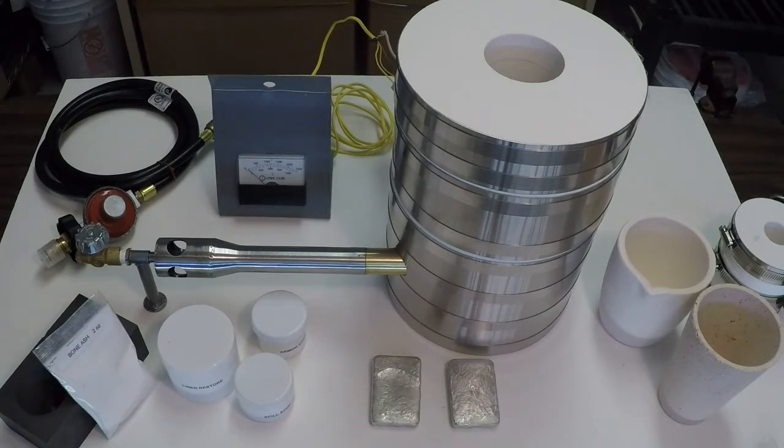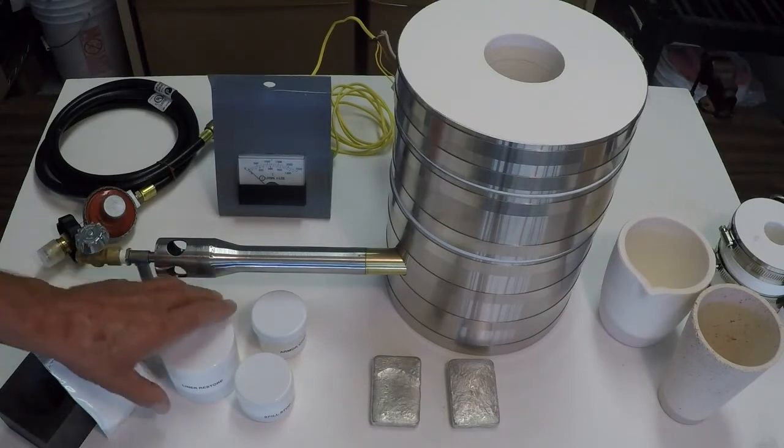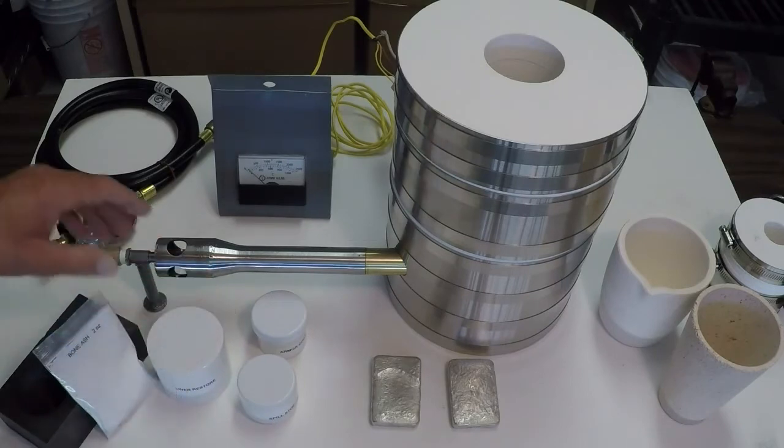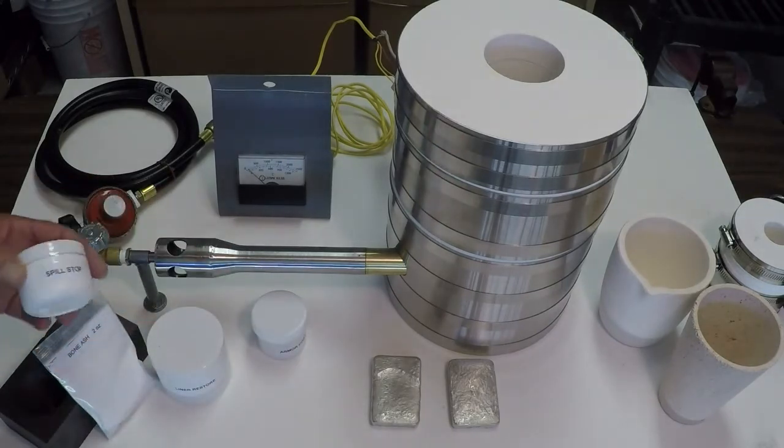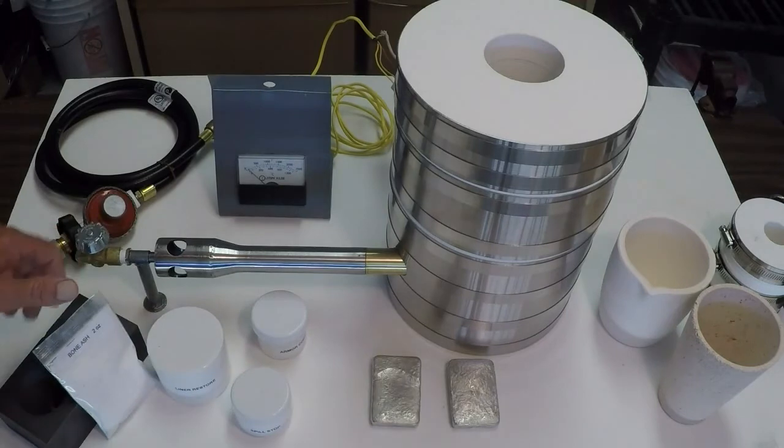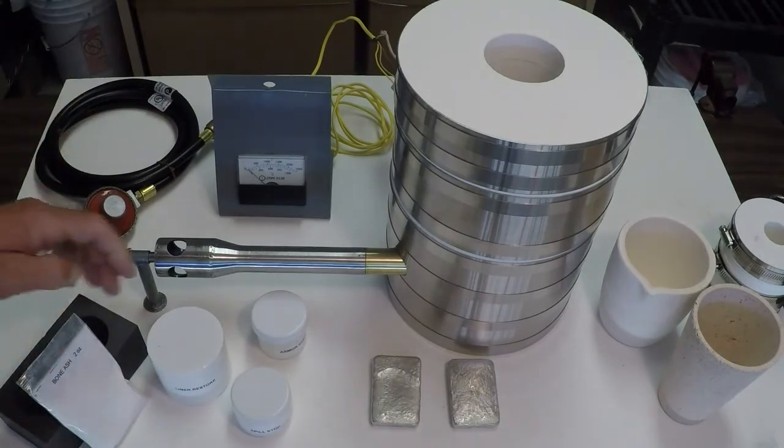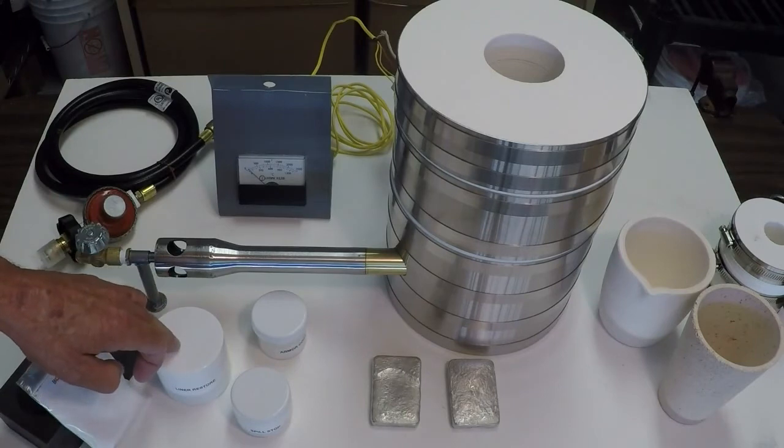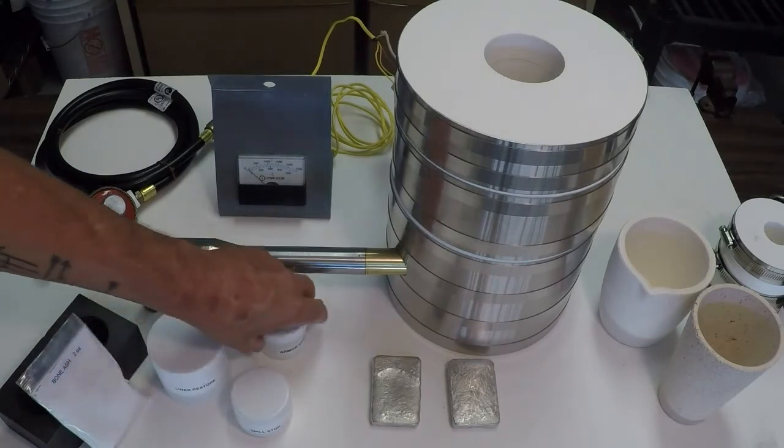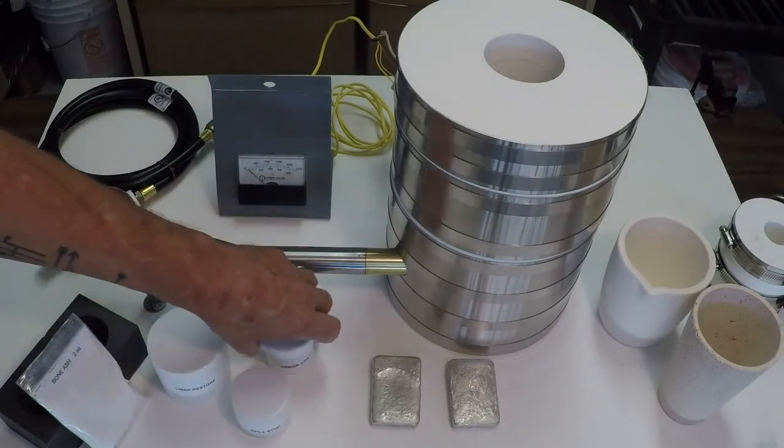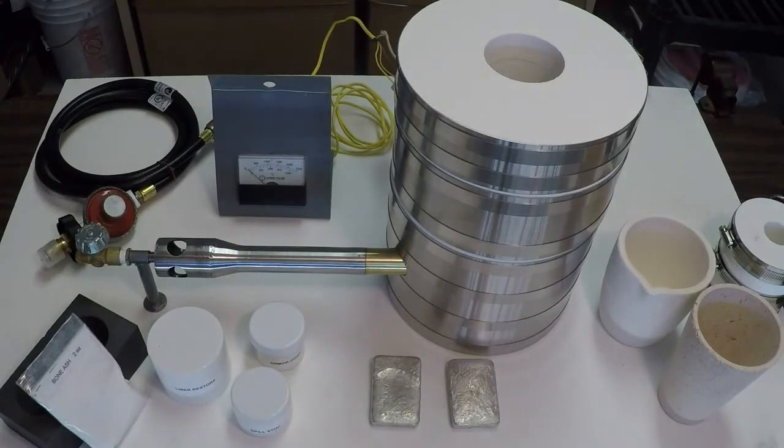We have what we call a spill stop, which is colloidal silica and bone ash. You mix it into a paste and paint it in the hole before you put the liner restore on, and that will absorb the borax and stop it from continuing to erode your liner. This is an armor coat, which is a high aluminum material really resistant to borax erosion that you can rub on there to armor it.